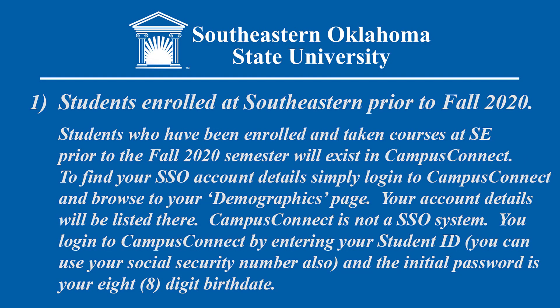Students who have been enrolled and have taken courses at Southeastern prior to the fall 2020 semester will exist in Campus Connect. To find your single sign-on account details, simply log into Campus Connect and browse to your demographics page. Campus Connect is not a single sign-on system, so you can log in using your student ID or social security number. Your password will initially be your age at birthdate; if you've changed that password and no longer remember it, contact the registrar's office to have it reset.